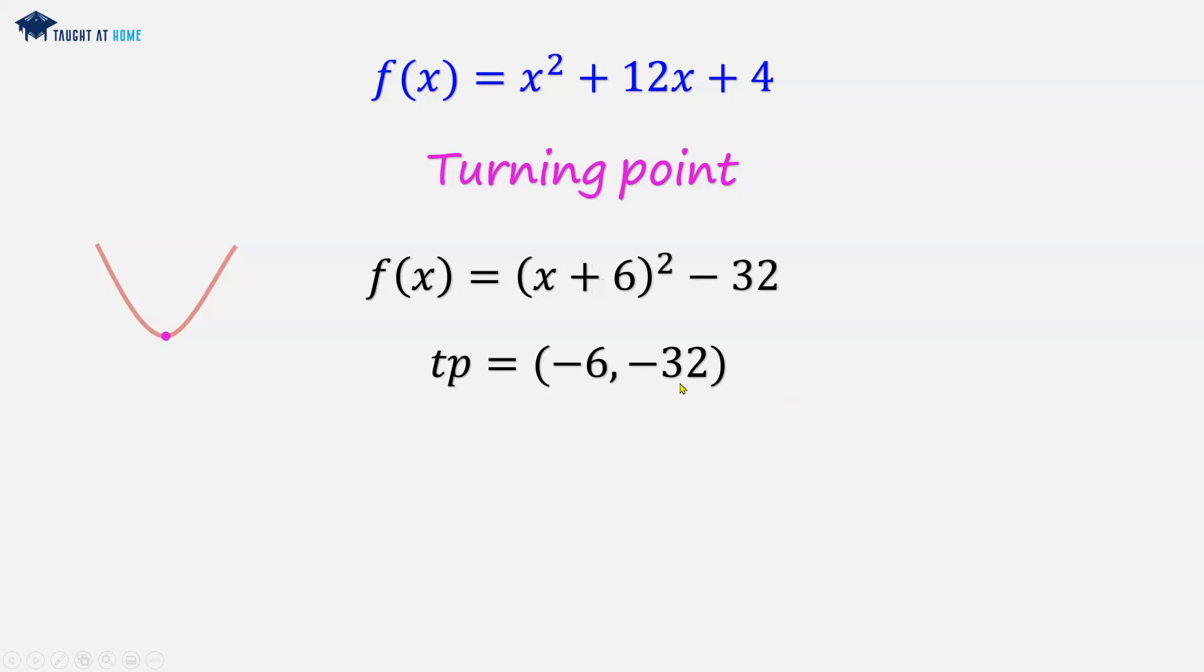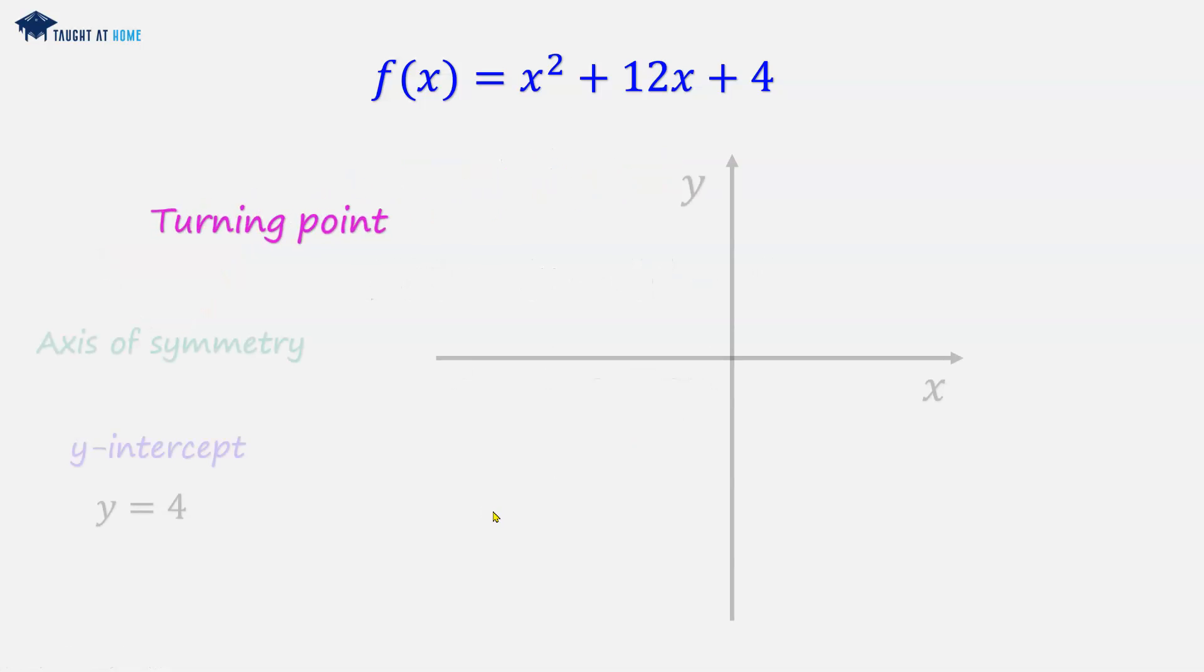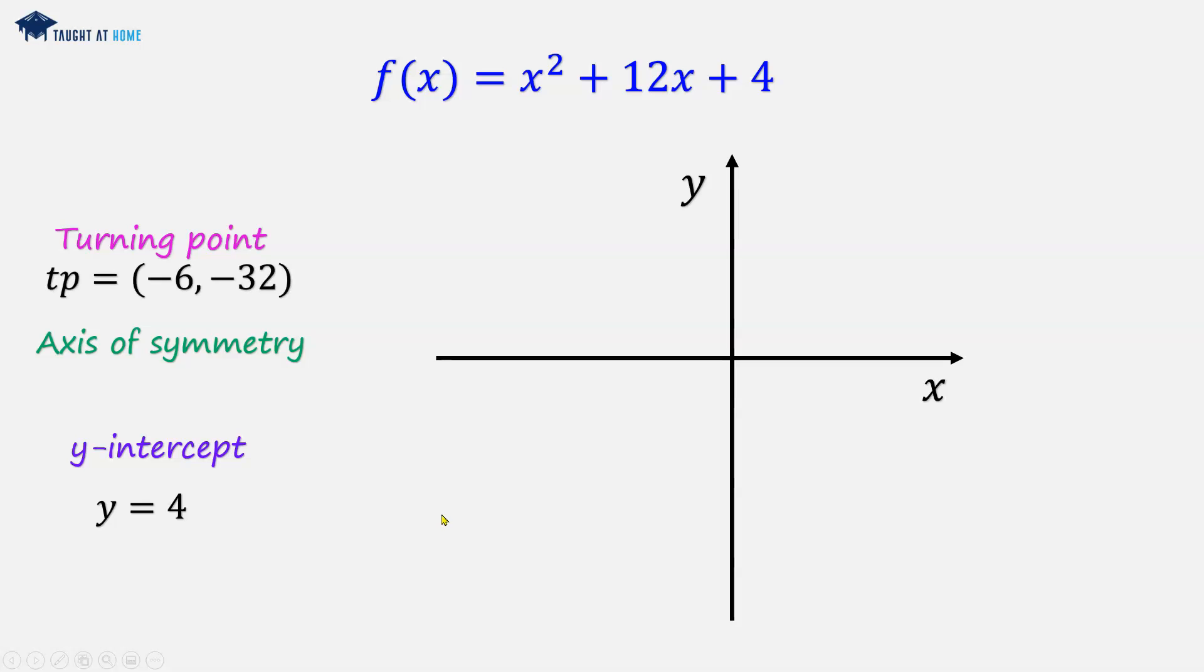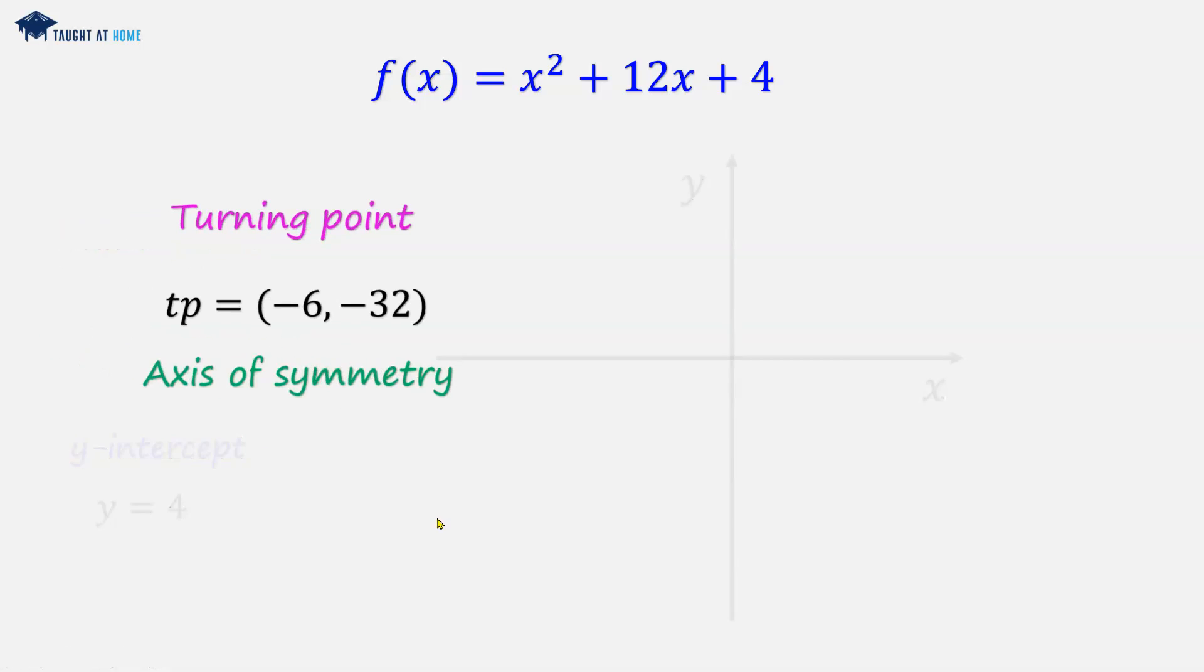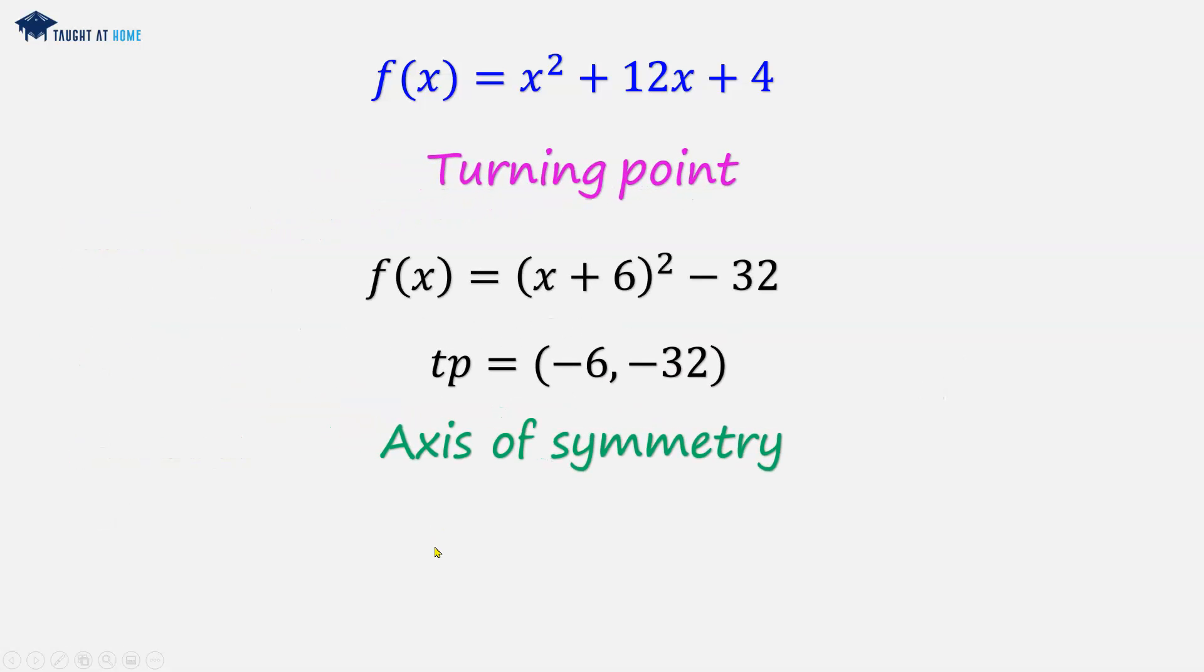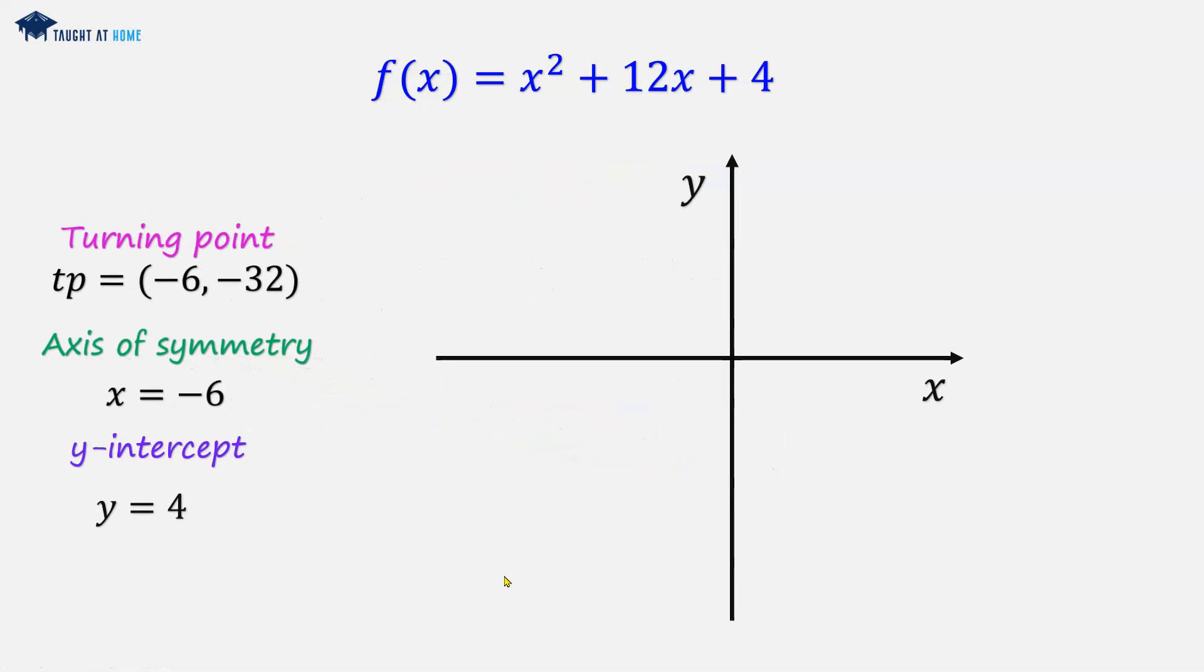So the turning point therefore is minus 6 and minus 32. The axis of symmetry is going to occur at the point where x is minus 6. And now we have our three parameters.